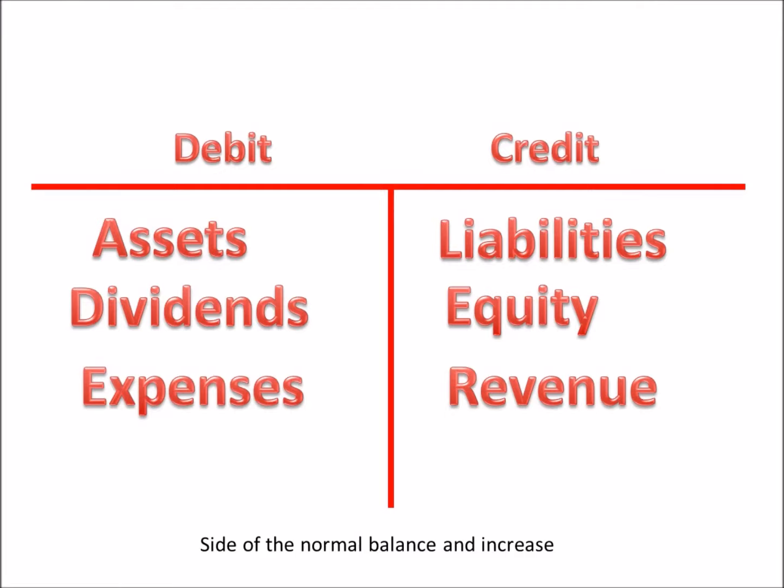So our debit and credit rules all come back to the accounting equation and the balance sheet. This table shows you whether to debit or credit each type of account if you're increasing it, and what the normal balance should be. To decrease an account, simply do the opposite.